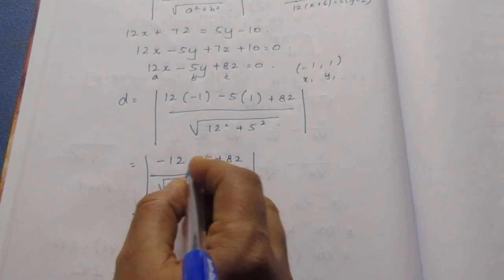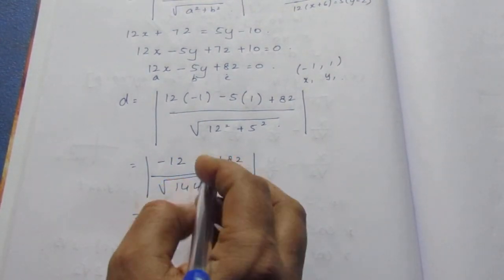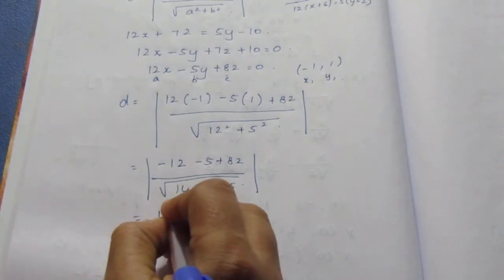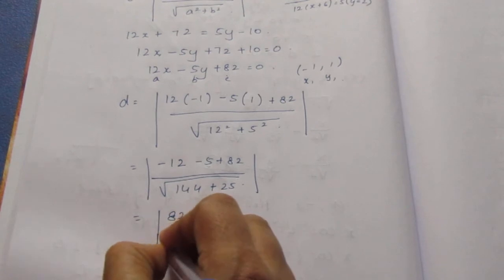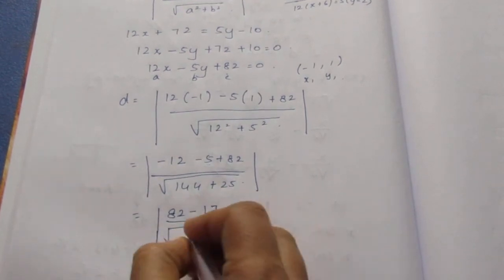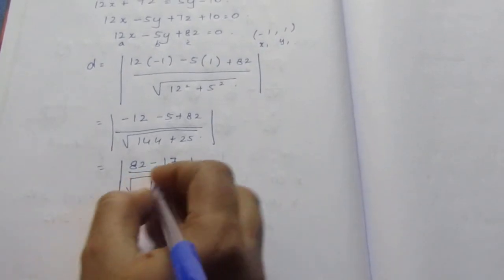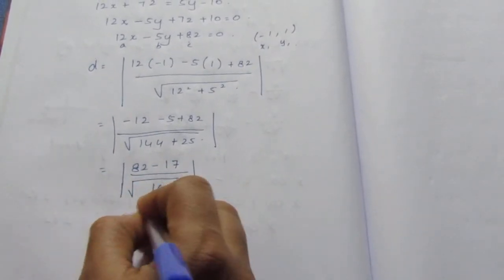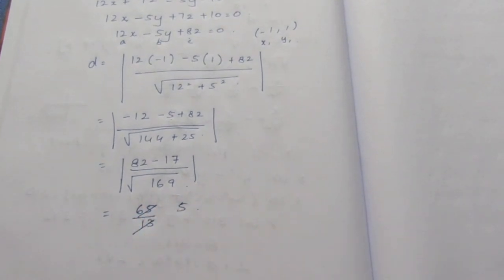Here it becomes 17, 82 minus 17 by root of 169. 169 is 13. We need to subtract the numerator which is 65 by 13. We can cancel this. This comes as 5.